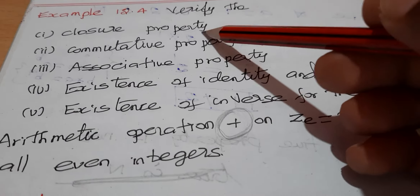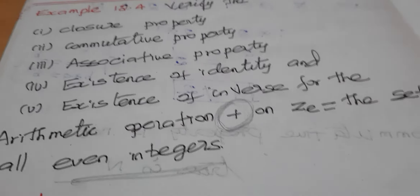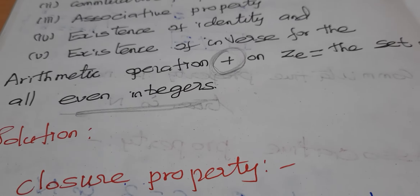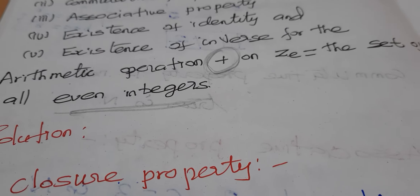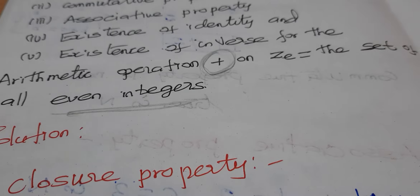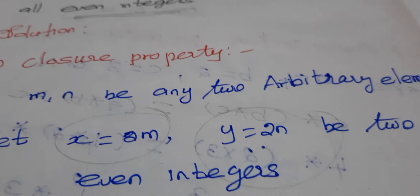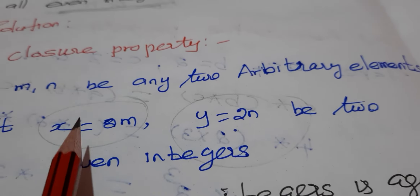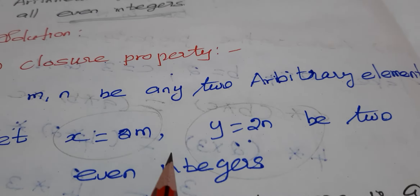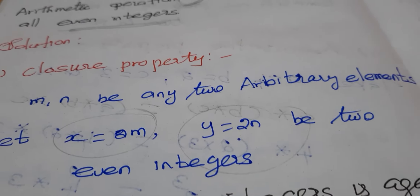Let us verify each property on Z_e with the operation addition. For the closure property, we take two elements: x = 2m and y = 2n, which are two even integers.